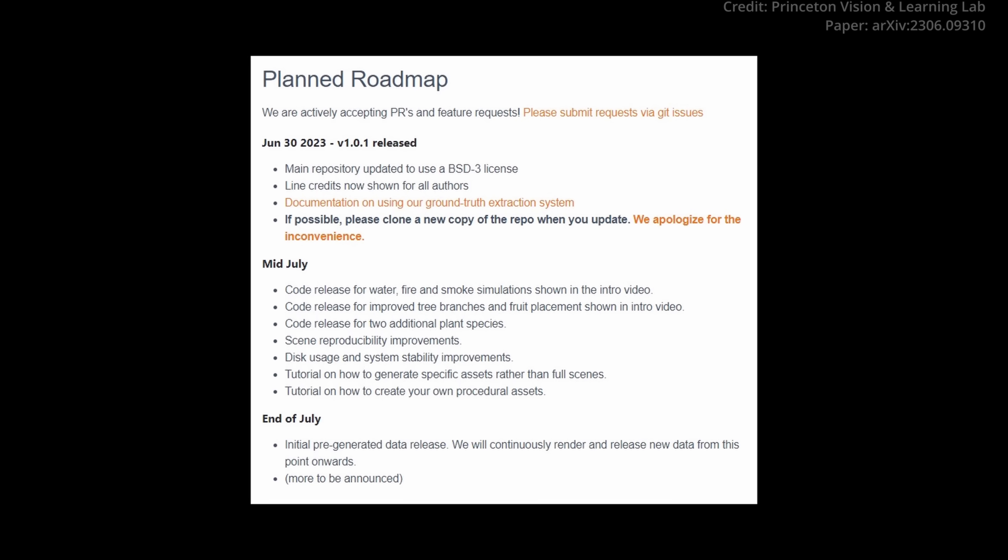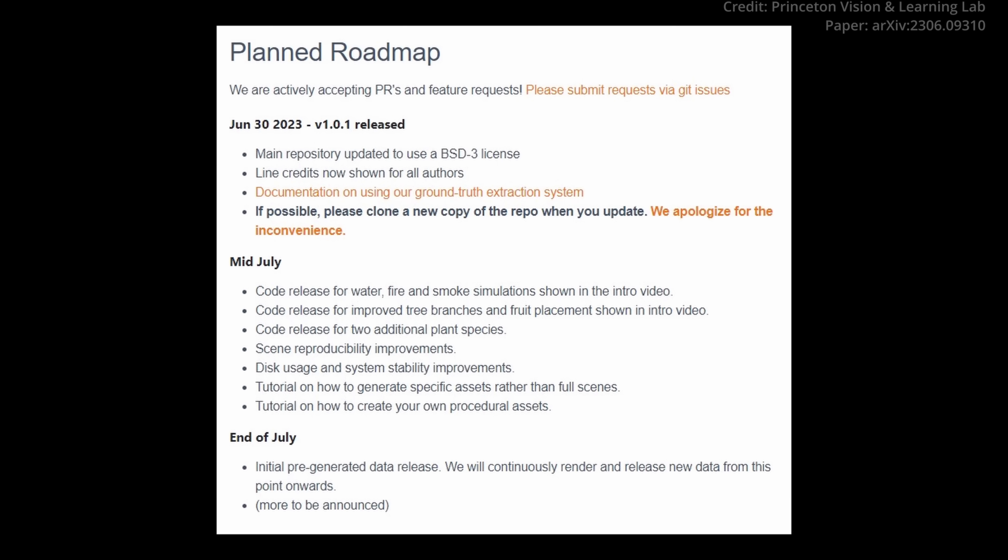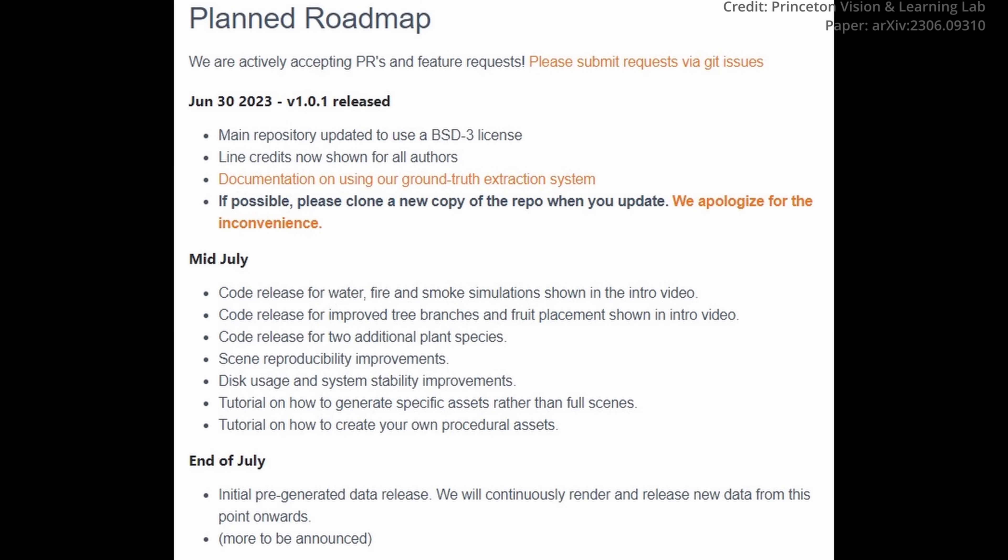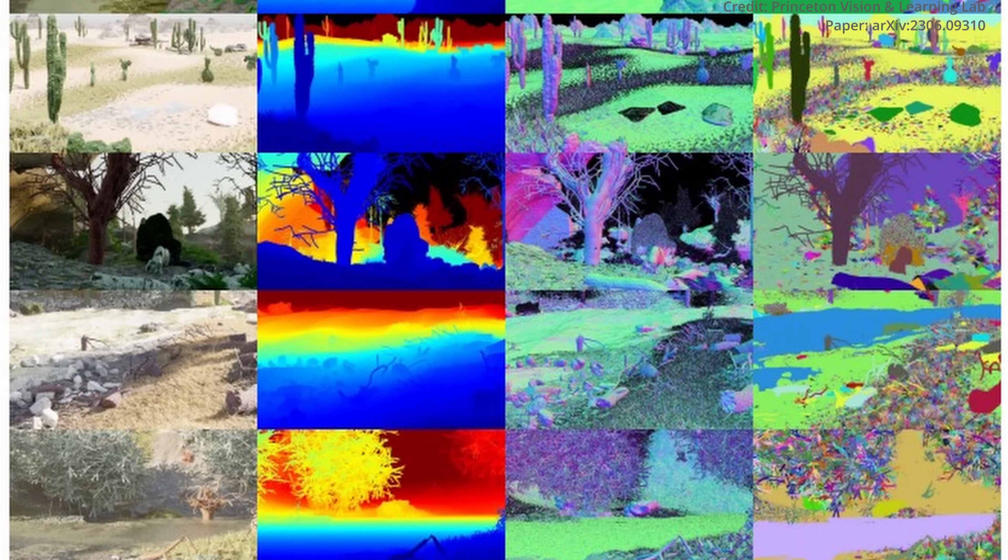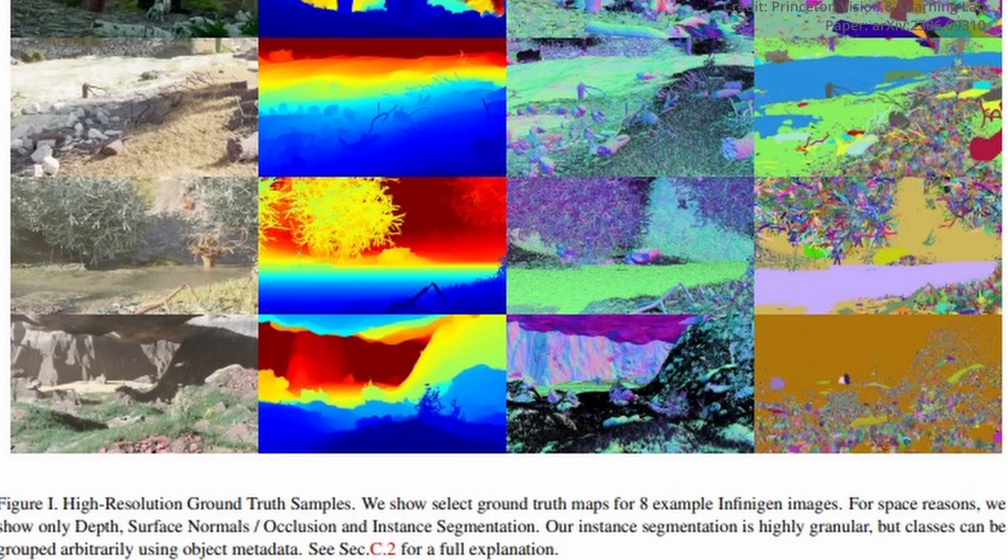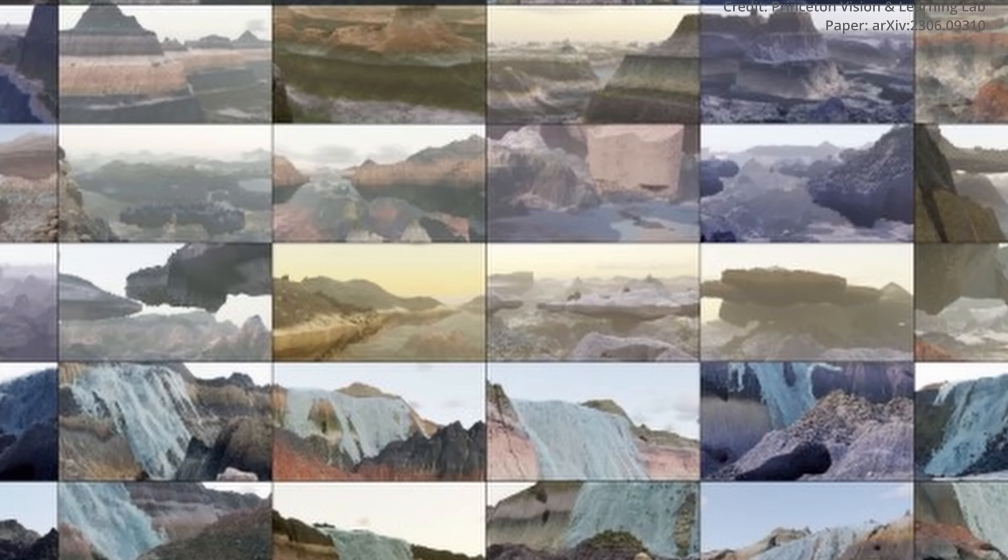As Infinigen continues to evolve, its future looks bright with collaborative efforts and open sourcing initiatives. The researchers intend for Infinigen to be a community-driven, open source project. They envision the expansion of its coverage to include all real-world elements, ensuring its continued development and growth. The commitment to offering Infinigen as a free resource shows the research team's dedication to foster collaboration and inspire further advancements in procedural generation.